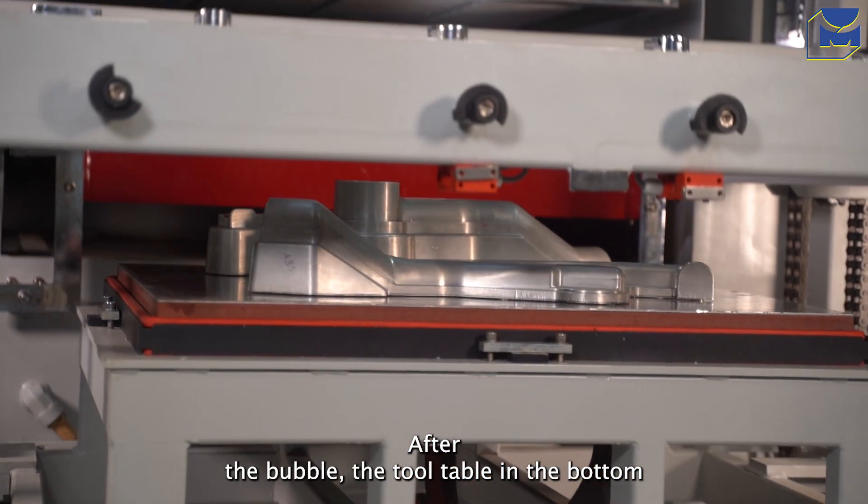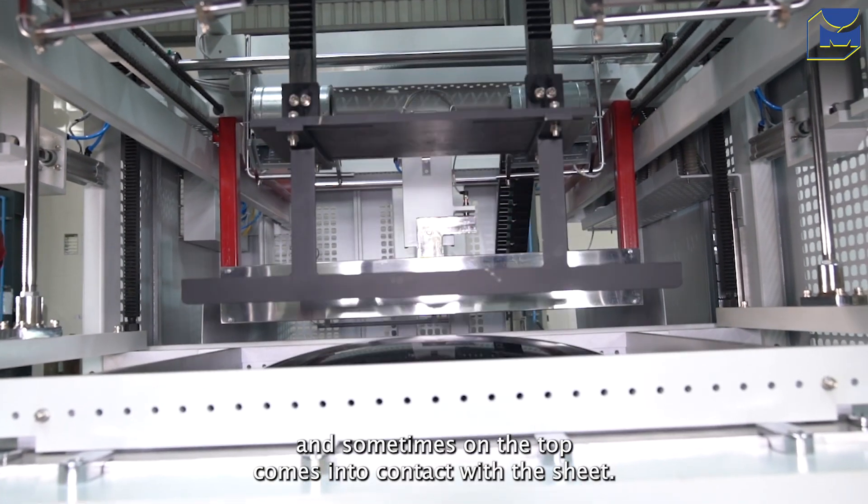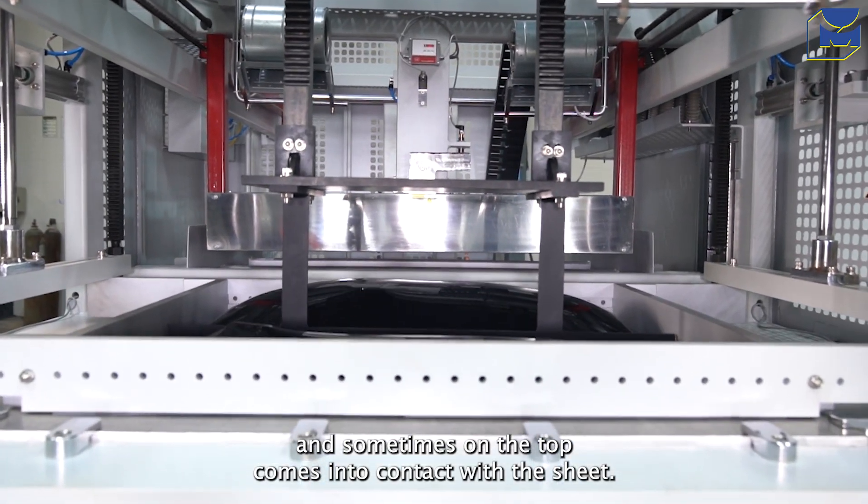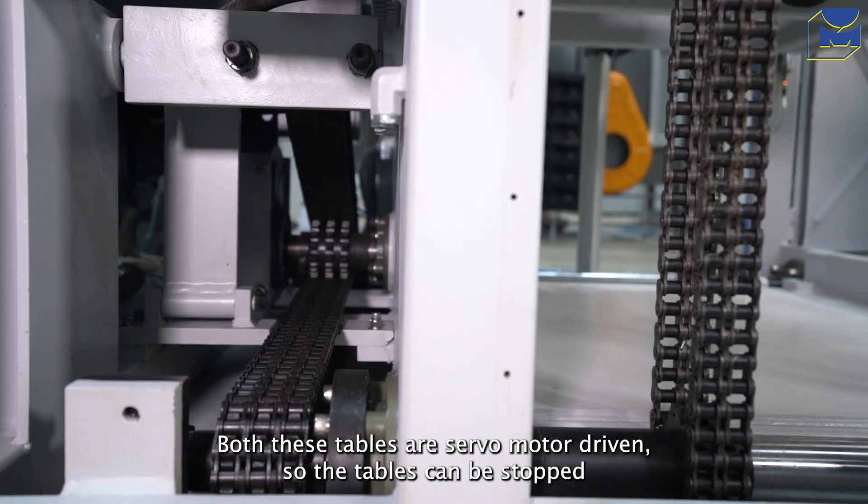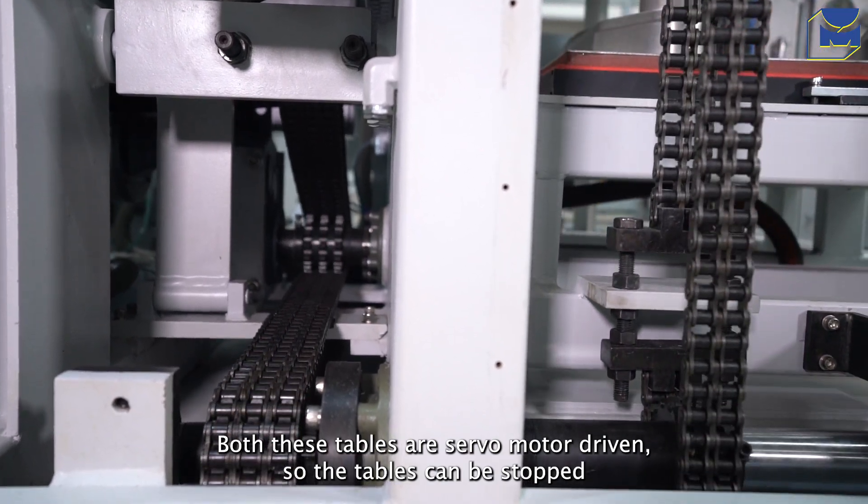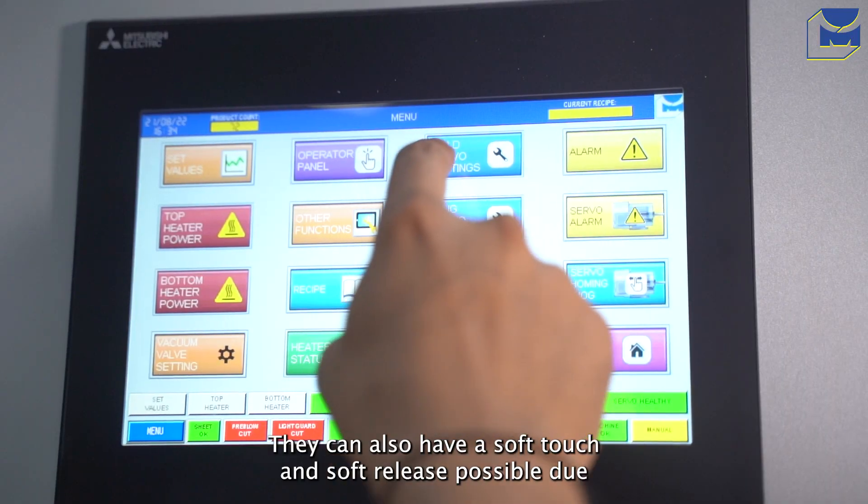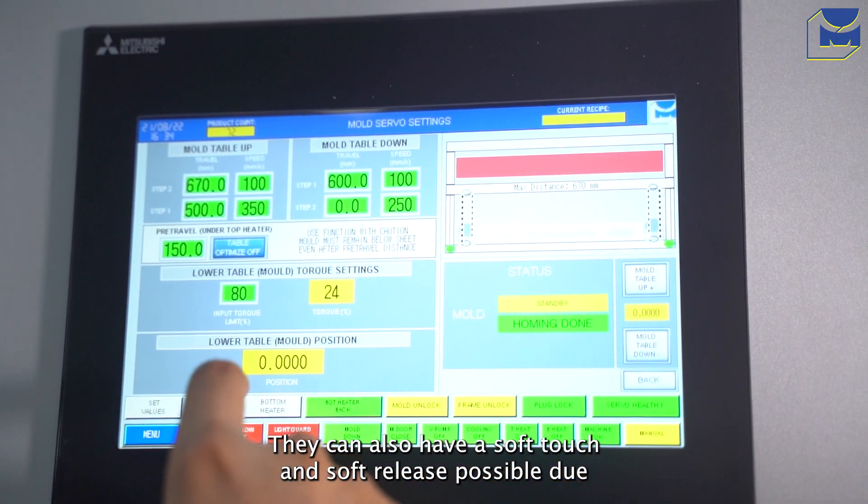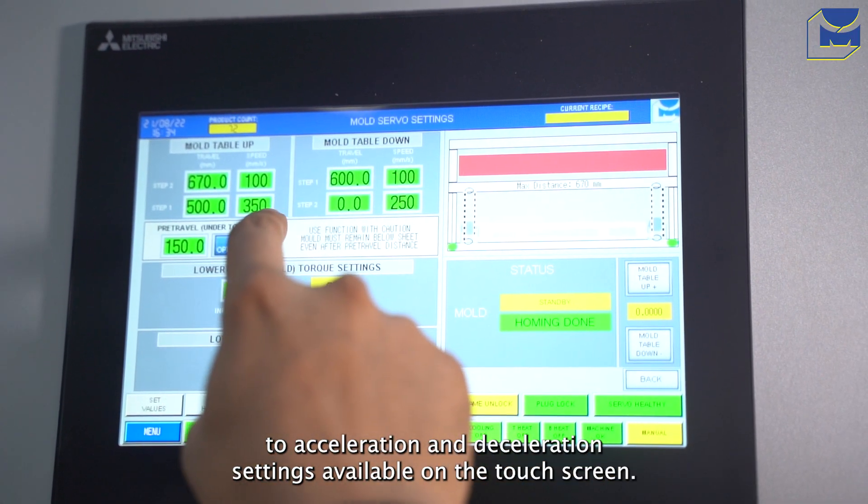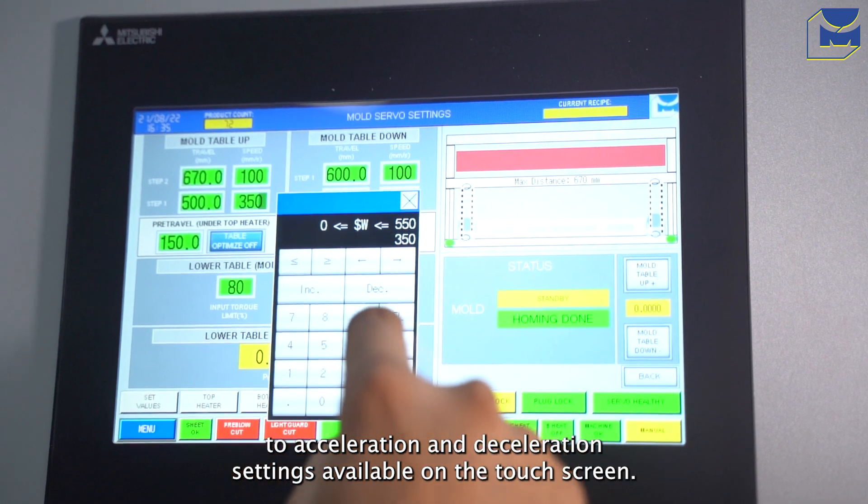After the bubble, the tool table in the bottom and sometimes on the top comes into contact with the sheet. Both these tables are servo motor driven, so the tables can be stopped at any distance between the sheet and the mold. They can also have a soft touch and soft release possible due to acceleration and deceleration settings available on the touchscreen.